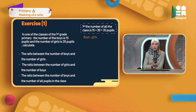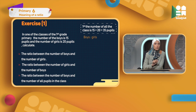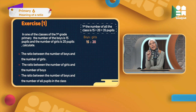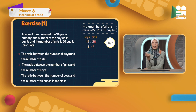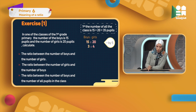Now I can start to answer. The first point asks for boys to girls — boys as first term, girls as second term. The number of boys is 15 to 20. Both 15 and 20 are divisible by 5: 15 divided by 5 gives 3, and 20 divided by 5 gives 4. So the ratio is 3 : 4. This means I have three boys for every four girls.